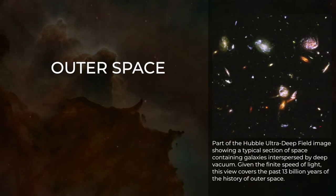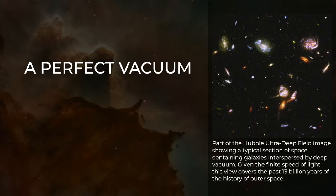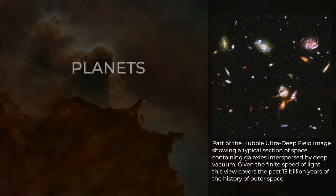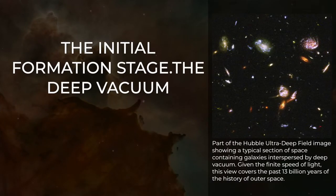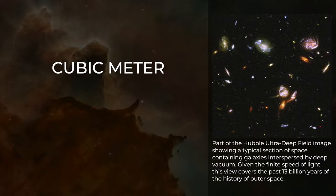Outer space is the closest known approximation to a perfect vacuum. It has effectively no friction, allowing stars, planets, and moons to move freely along their ideal orbits following the initial formation stage. The deep vacuum of intergalactic space is not devoid of matter, as it contains a few hydrogen atoms per cubic meter.